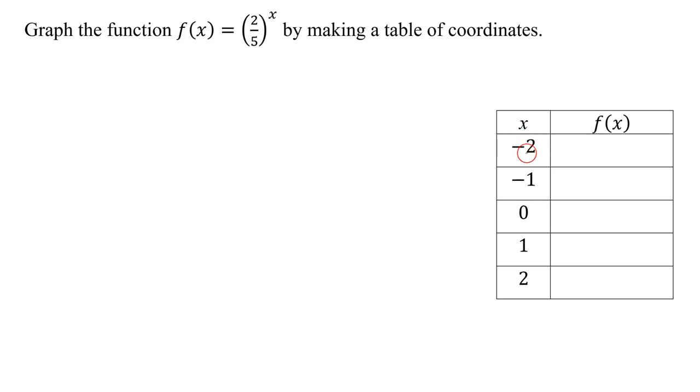We're going to start where x equals negative two. We're going to find the function f evaluated at negative two, and it's going to equal two-fifths all raised to the x power, and what's x in this case? Negative two. How do we evaluate a fraction raised to a negative exponent? It equals the reciprocal raised to the positive exponent. So the reciprocal of two-fifths is five-halves, and I'm going to raise it to the positive two exponent.